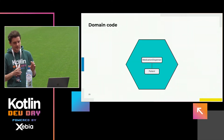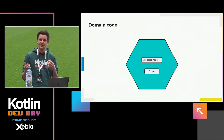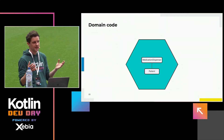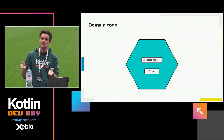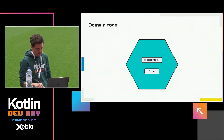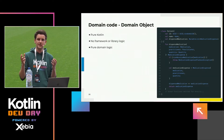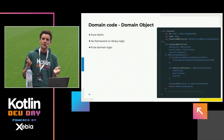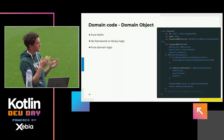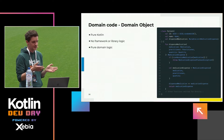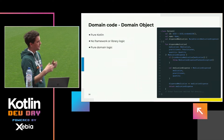For this example I built a fictional domain: a medication dispenser. You have a patient and medication can be dispensed to the patient, but there are business rules — it has to be checked that the medication dispense isn't interfering with previously dispensed medication. This is a domain object, and as you can remember from the previous slide with the database annotations, here there are no ORM annotations. This is pure Kotlin code and pure domain logic — no framework, no libraries.